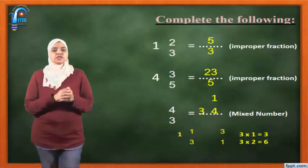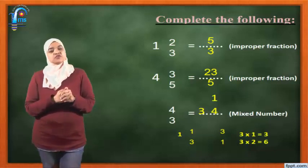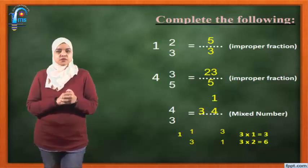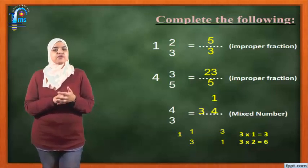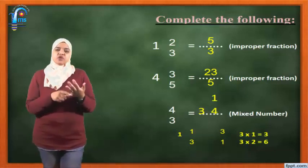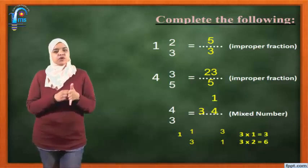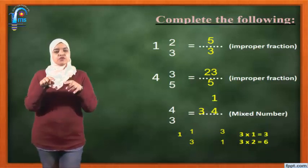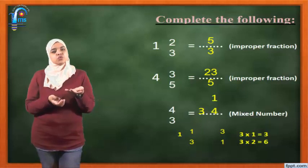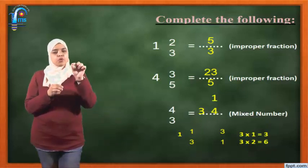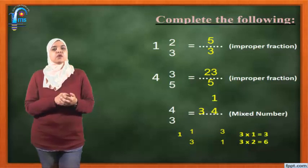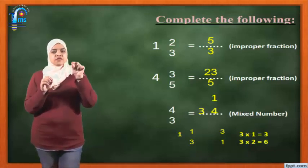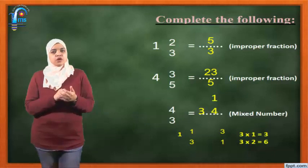4 over 3 equals what? Here I want to change the improper to a mixed number by using long division. Do you remember? 4 divided by 3. I'm going to write table 3: 3 times 1 equals 3, and 3 times 2 equals 6. 4 is between 3 and 6, so I use the smaller one. I write 1, and the denominator is 3. 4 minus 3 equals 1. So the answer is 1 and 1 over 3.